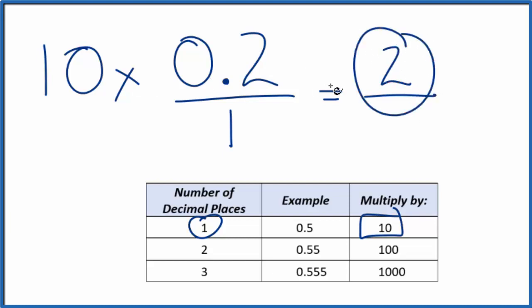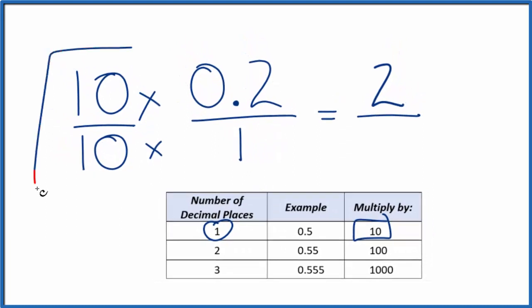But 2, that's not equal to 0.2. We also need to multiply by 10 on the bottom. So think of it this way: 10 over 10, 10 divided by 10, that's just 1. So we're multiplying by 1, we're not changing anything. But 10 times 1, that gives us 10 here in the denominator, and now we have a fraction.